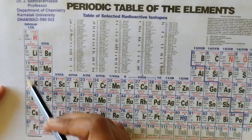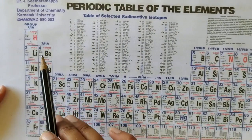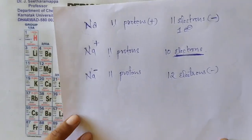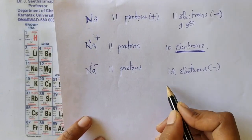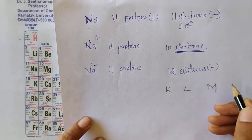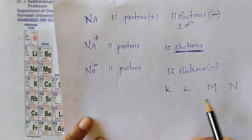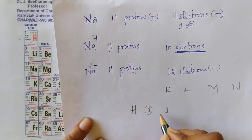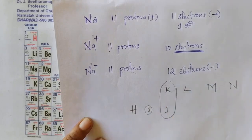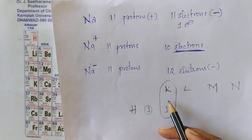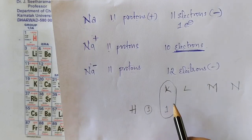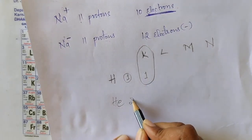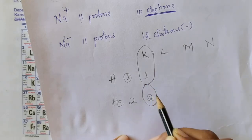There are 7 periods and each period consists of a series of elements having the same valence shell. Valence shell means outermost shell. Inside atoms there are different shells: K, L, M, and N. For hydrogen with atomic number 1, its one electron is placed in the K shell, so the valence shell is K. For helium with atomic number 2, both electrons are placed in the K shell, so its valence shell is also K.